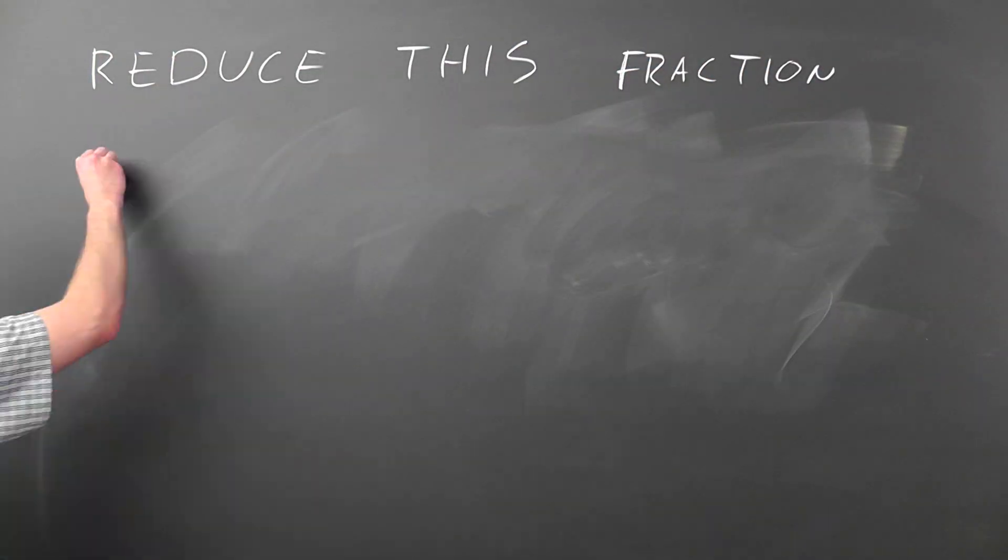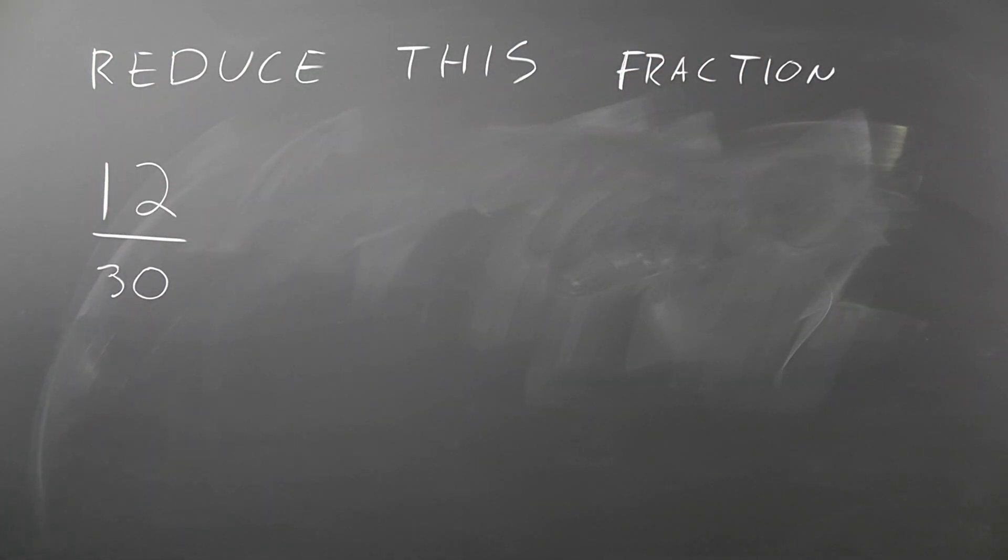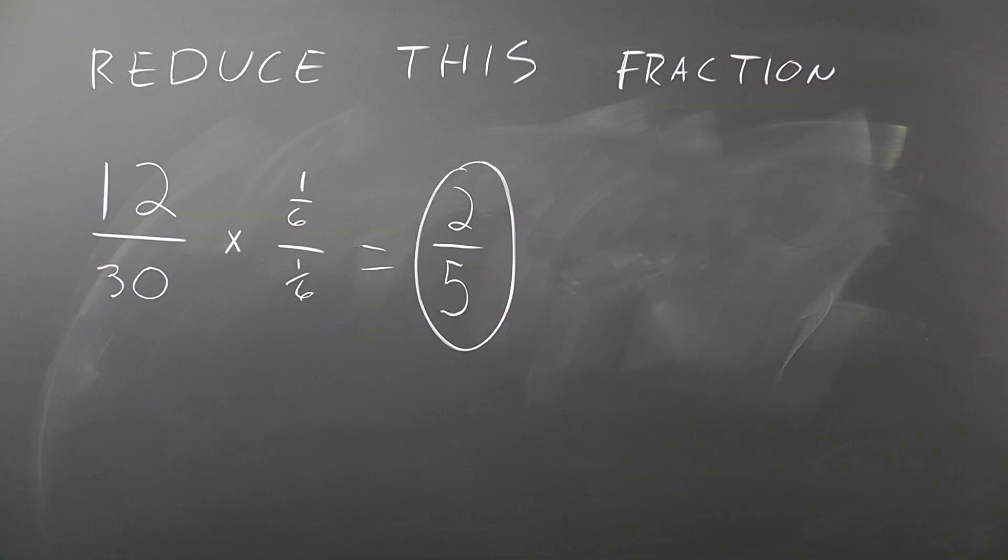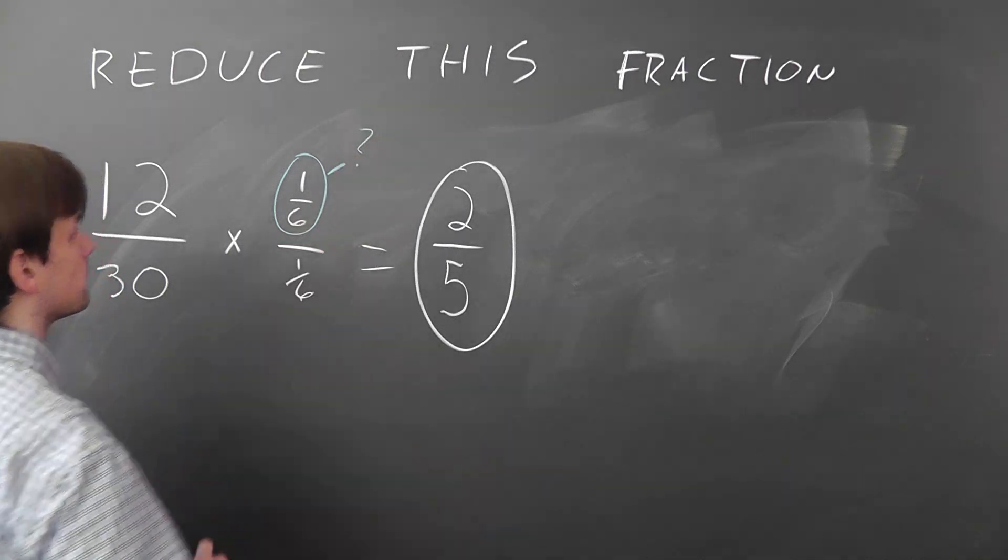Let's say you have a fraction, like 12 over 30, and you want to reduce it. This can be done by finding the greatest common divisor of both numbers and dividing by that. The question is, how do you find the greatest common divisor?